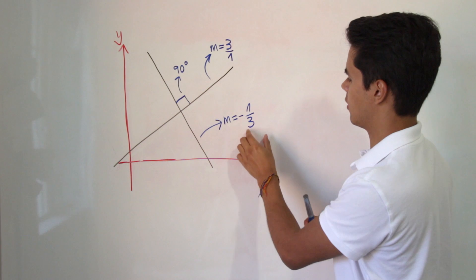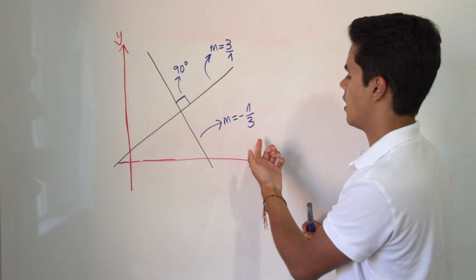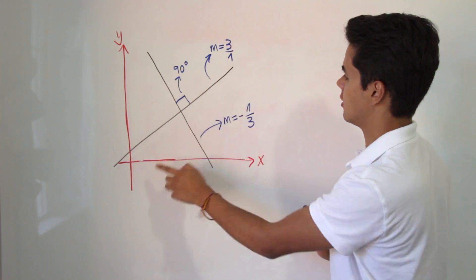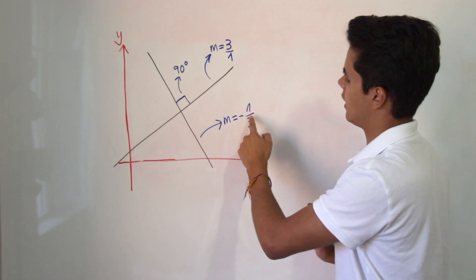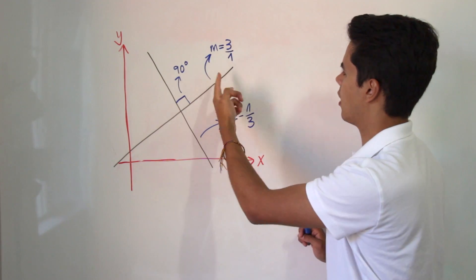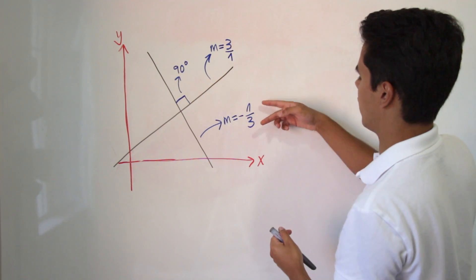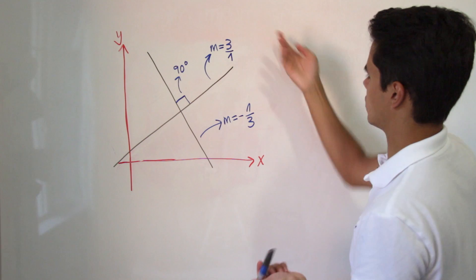So if we had this line with this slope of negative 1 over 3 and we wanted to find this line which is the perpendicular line, we just have to get rid of that negative, or like a negative of a negative would be a positive number, and then we just flip the number so 3 over 1 which is just 3.